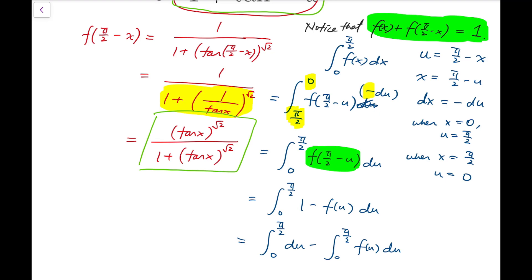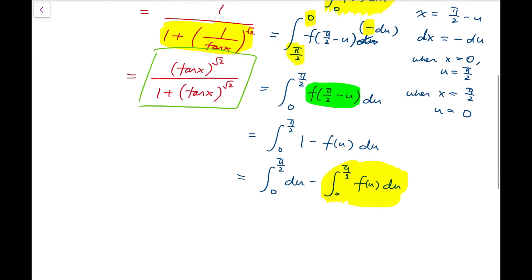So at this point, we can actually solve our original integral because our original integral is exactly equal to integrating f of u. Integrating f of u du from u equals 0 to pi over 2 is just a dummy variable. In fact, if I just replace all the u's into x, then they're exactly the same.